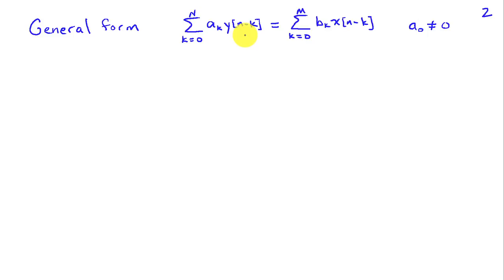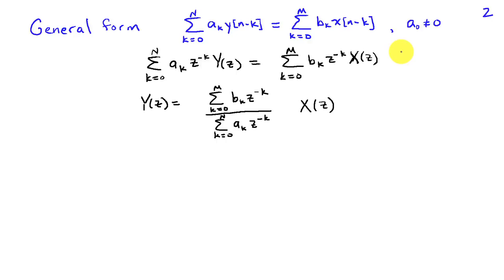So if we take the Z-transform of both sides of this difference equation using the timeshift property, we have the sum AK z to the minus k y of z on the left-hand side. On the right-hand side, we have the sum BK z to the minus k x of z. We can solve for y of z as a function of x of z. Y of z is equal to this rational function of z inverse involving the parameters of the difference equation with the AKs in the denominator and the BKs in the numerator.